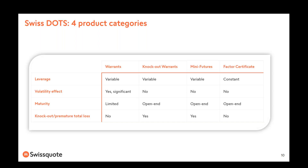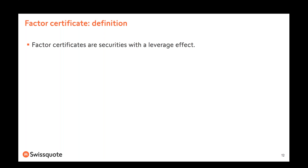At your disposal are recordings of previous webinars about warrants, knockout warrants, and mini futures, as well as our blog, Swiss Code Education, which has a section dedicated to Swiss DOTS products. We also have a landing page on our website, swissquote.com, with Swiss DOTS videos and ebooks available. Among the four product categories, the peculiarity of factor certificates is that the leverage is constant — it does not change over time as with other products.